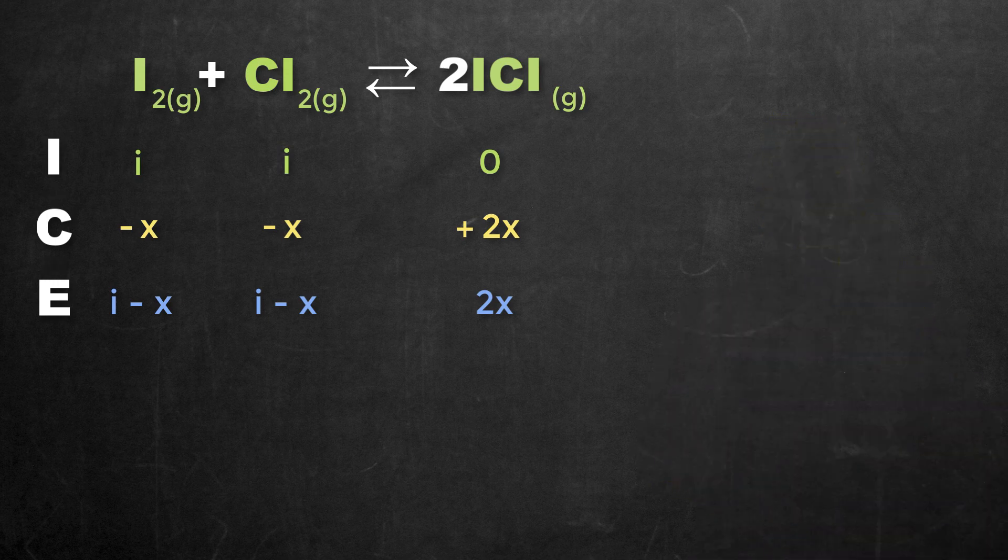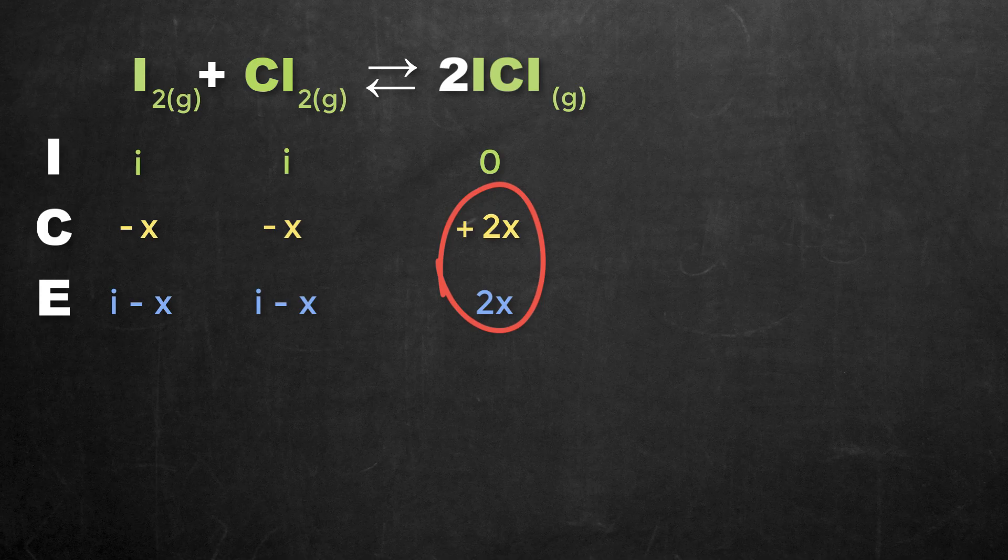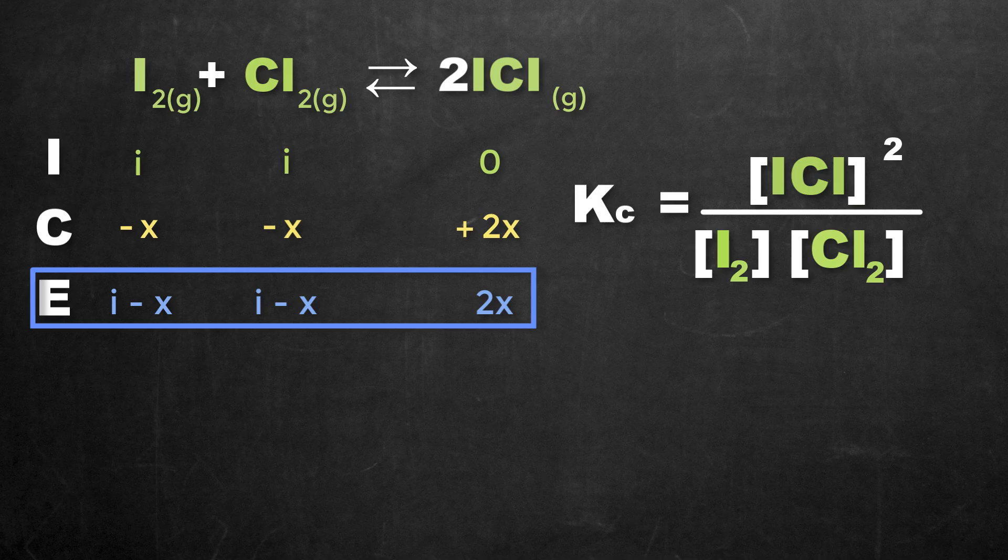Now, it should be noted that since our product concentrations are zero, that the E is effectively just going to be the C for the products.